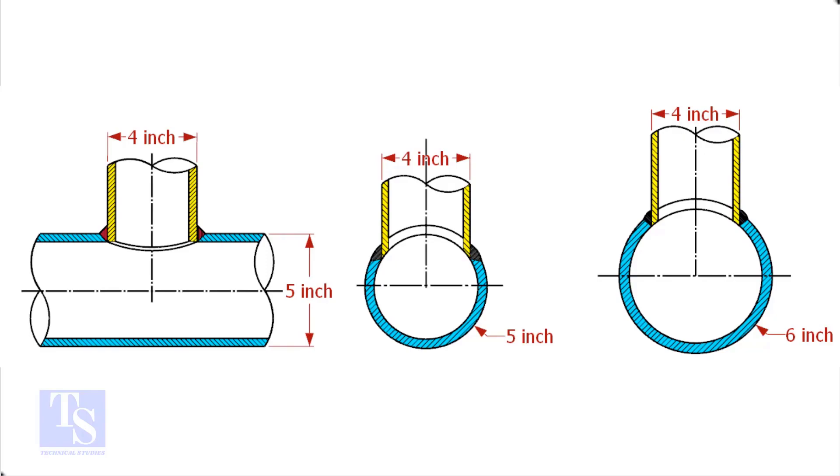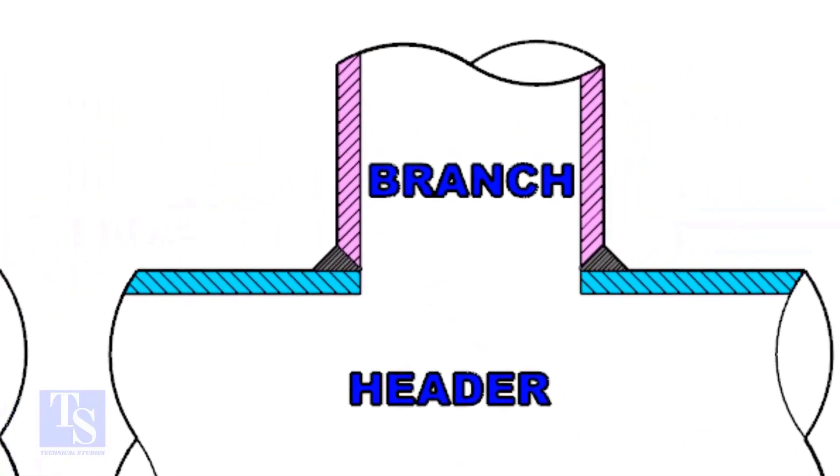Watch the section side view carefully. Check the stub-on view. The branch pipe sits on the header. The cut-back cutting of the branch pipe is done and the bevel also is prepared.